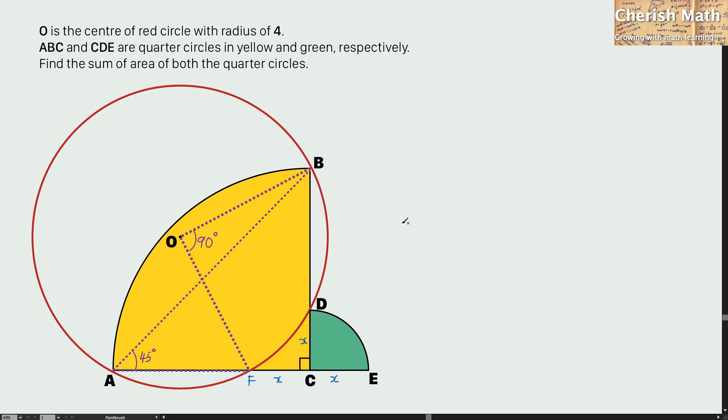Let me label the radius of the yellow quarter circle to be y. Let me connect a line from point B to point F. And I will have to find what is the distance of BF by referring to the triangle BOF. Since the radius of the red circle is given as 4 units,